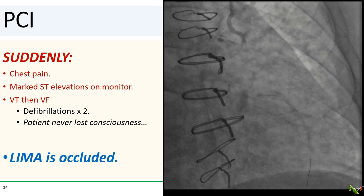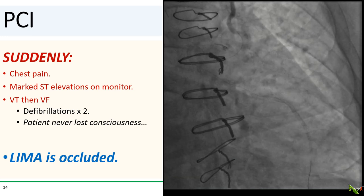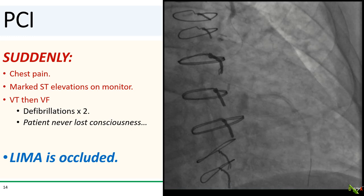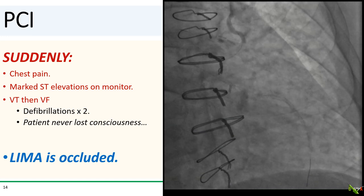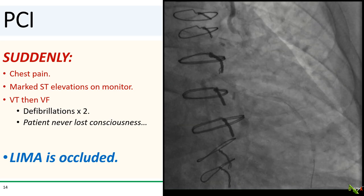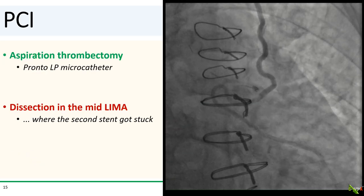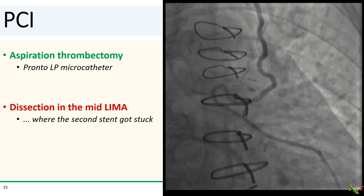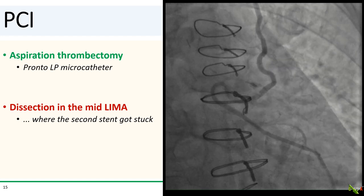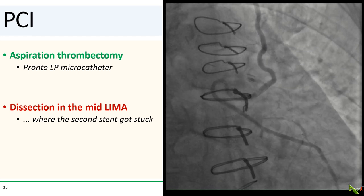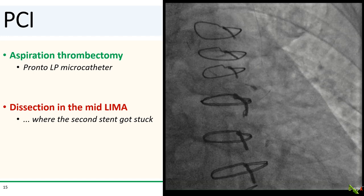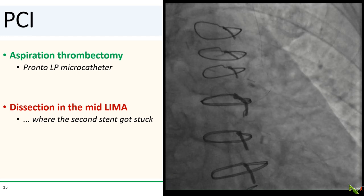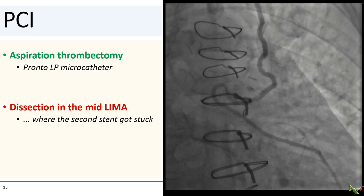Then the patient started complaining of severe chest pain. The monitor showed dramatic ST elevations. He then had a run of VT and then VF — he was actually still conscious and had to be defibrillated twice. An injection revealed that the LIMA was occluded. After a quick aspiration thrombectomy, we saw there was a lucency in the mid-LIMA, probably a dissection where the second stent got stuck. All of our back-and-forth pushing of the second stent had probably injured the wall of the LIMA. Anecdotally, I've found the LIMA to be quite fragile and susceptible to injury from wires, equipment, and guideliners — much more so than coronary arteries.